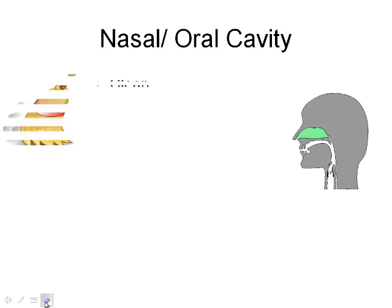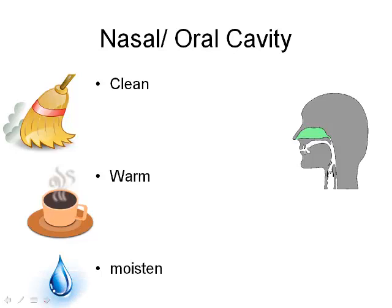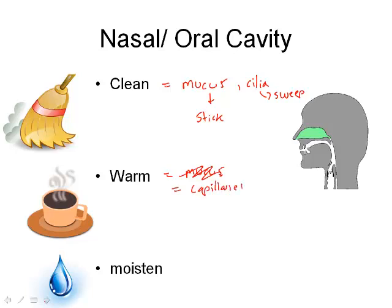The nasal and oral cavity have a few functions: cleaning, warming, and moistening. To clean, we have mucus which causes bacteria, dust, and debris to stick, and then cilia — tiny micro-hairs — sweep it away. Mucus and capillaries in the area warm the air as it passes through. The air is also moistened by mucus so it doesn't dry out and crack.